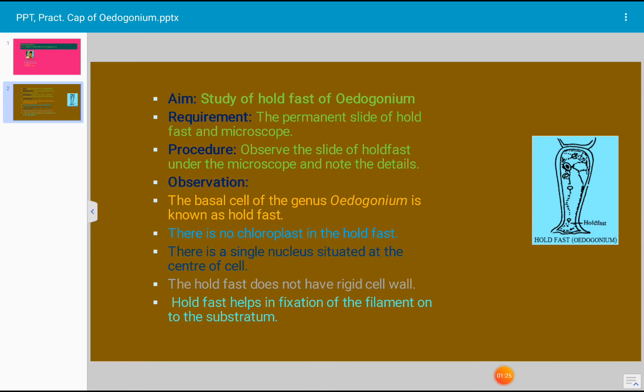There is a single nucleus which is situated at the center, and the hold fast does not have rigid cell wall. Cell wall is not rigid, and hold fast helps in fixation of filament on the substratum. These are the characteristic features of hold fast cell of the Oedogonium.